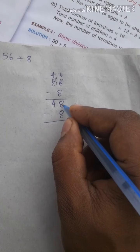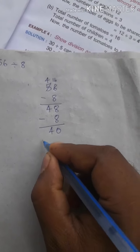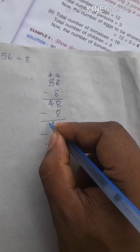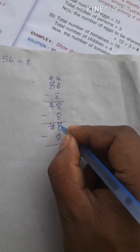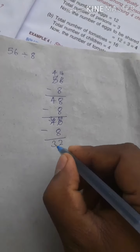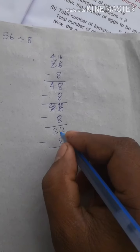Then again subtract 8. If you subtract, what is 8 minus 8? Is 0. Write 4 here down. Then again you subtract. 10 minus 8 is 2. 3 here down.